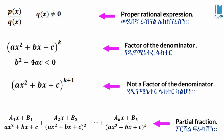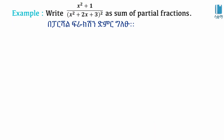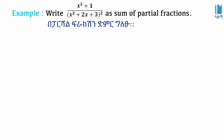We write x squared plus 1 over (x squared plus x plus 3) squared as a sum of partial fractions. So we have the partial fraction decomposition. We need to check whether x squared plus 2x plus 3 can be factored further with a linear factor.